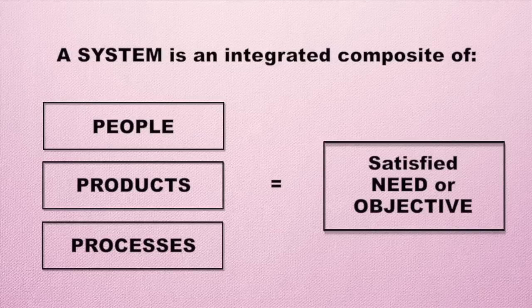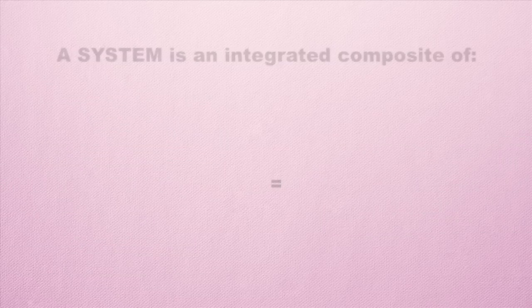The goal is to set a target for where you want to get — what does this system need to look like, how is it going to operate, and then what are the people, products, and processes I need to put in place to make all of that happen?